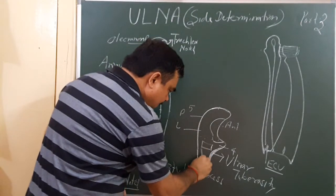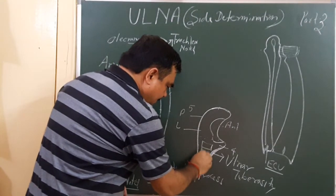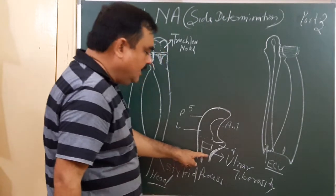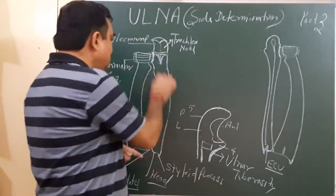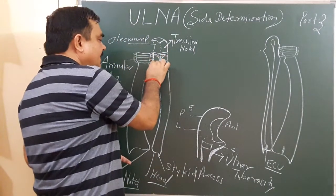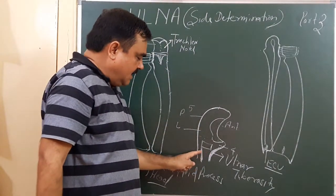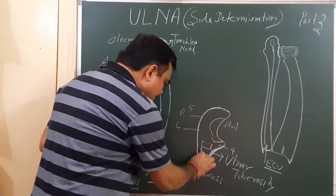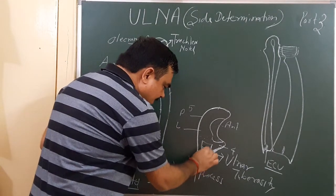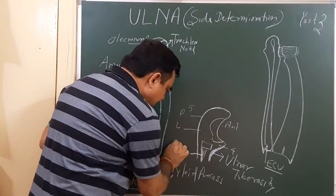This is the supinator crest present on the lateral surface of the coronoid process. This is the coronoid process. Here is the lateral surface of the coronoid process. This crest-like structure is the supinator crest.